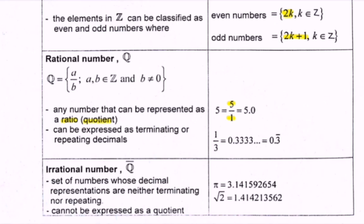For the rational number, it can also be expressed as terminating or repeating decimal places. For example, 1 over 3, expressed as a decimal, is 0.333 and so on, or we write 0.3 with a bar, indicating the repeating situation. Next we have the irrational numbers, denoted as Q-bar, which is the set of numbers whose decimal representation is neither terminating nor repeating — meaning it is not rational. The definition also states that it cannot be expressed as a quotient. Examples include the value of pi and the square root of 2.